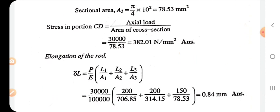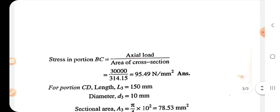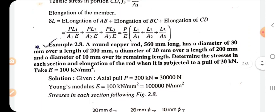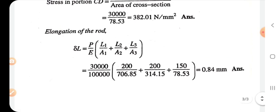Elongation of the rod: delta L = (P/E)(L1/A1 + L2/A2 + L3/A3). This formula applied to this problem: delta L = (30,000/100,000)(200/706.85 + 200/314.15 + 150/78.53) = 0.84 mm.